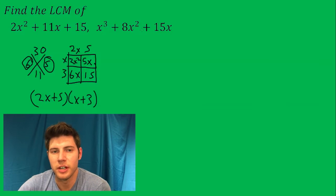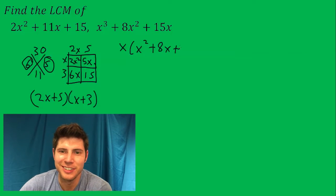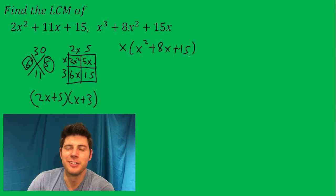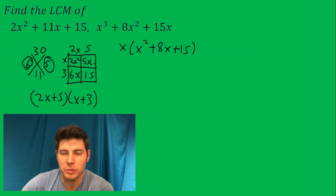Now for this one, first thing I see is a common term so we're gonna pull an x out first. So that gives us x squared plus 8x plus 15, and then we're going to do the same thing. We want two numbers that multiply to 15 and add to 8. In this case, 5 and 3.